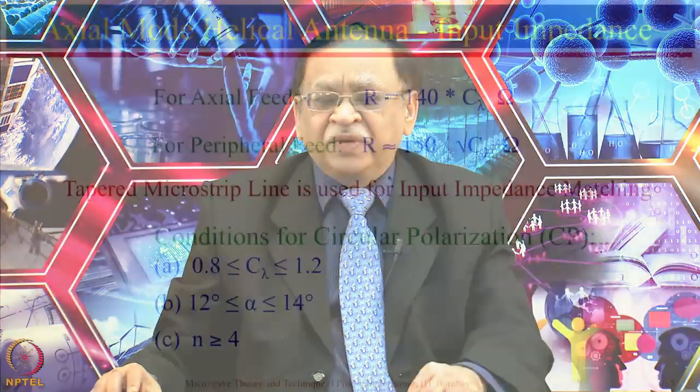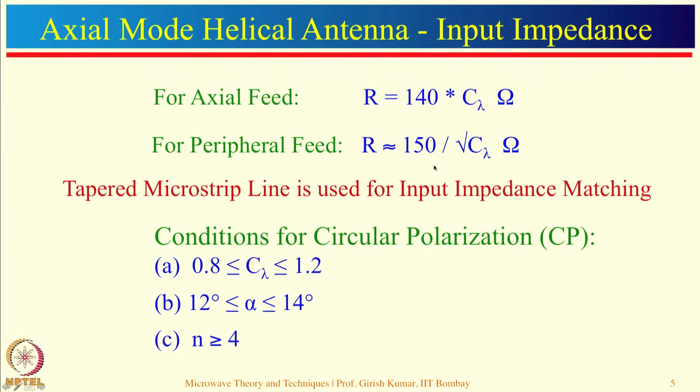The input impedance is of the order of 140 to 150 ohms. If you want to feed with a coaxial feed which is 50 ohms, you need to design a tapered microstrip line for input impedance matching — at one end it can be 140 to 150 ohms and at the other end it will be 50 ohms. Typically the length should be about lambda/2, or you can use two quarter-wave transformers to do the impedance matching.